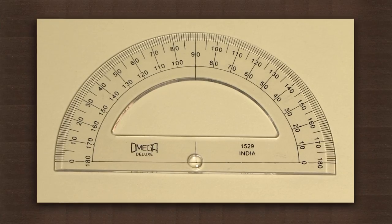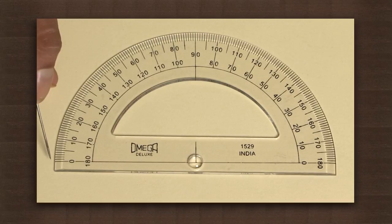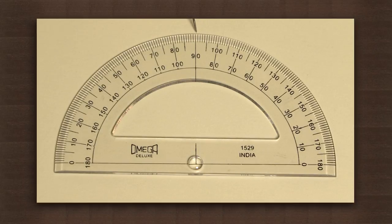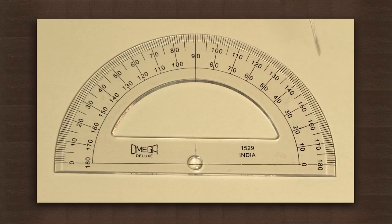Next we have a protractor. This is zero degrees, 90 degrees and 180 degrees. The least count of the protractor is one degree.